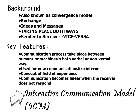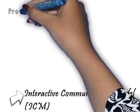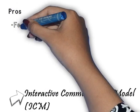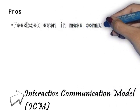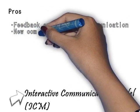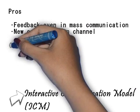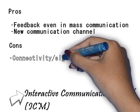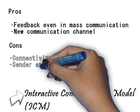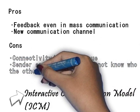New technologies are acknowledged in the process. For the pros and cons: feedback is present even when using mass communication through the use of other sources, and new communication channels are present. As a drawback, connectivity or signal can be an issue, and the sender and the receiver might not know each other because of the nature of the model itself.